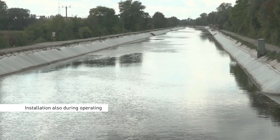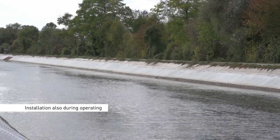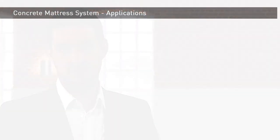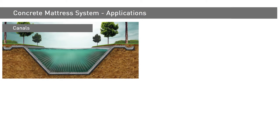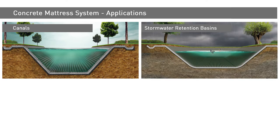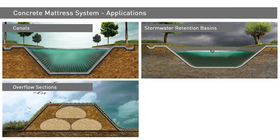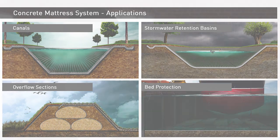Another fundamental benefit of the versatile concrete mattress system is its easy installation underwater. This allows canal refurbishments, for example, to be performed under operating conditions. In addition to the enormous technical benefits, the possibility of casting monolithic jointless concrete slabs in almost any conceivable geometry opens up a vast array of applications. These include canal or stormwater holding basin linings, overflow sections and bed protection, even in heavily trafficked ports, to name just a few examples.